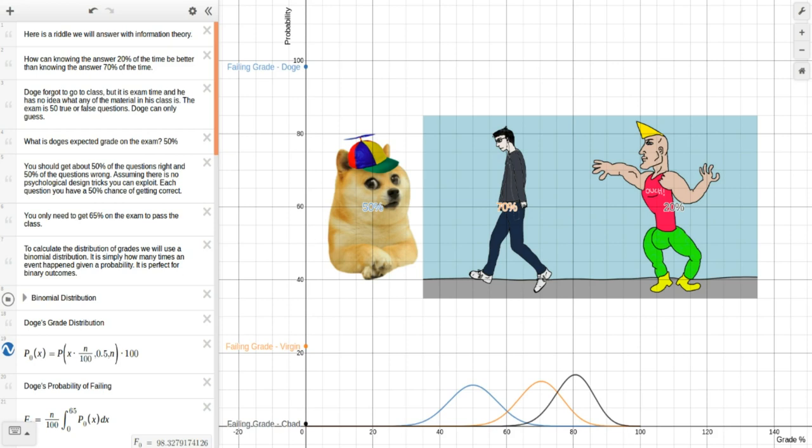Doge can only guess what is Doge's expected grade on the exam. It's a 50%. You should expect to get about 50% of the questions correct and 50% of the questions wrong, assuming that there's no psychological design tricks you can exploit. Each question has about a 50% chance of getting correct. Now you need to get a 65% on this exam to pass the class.